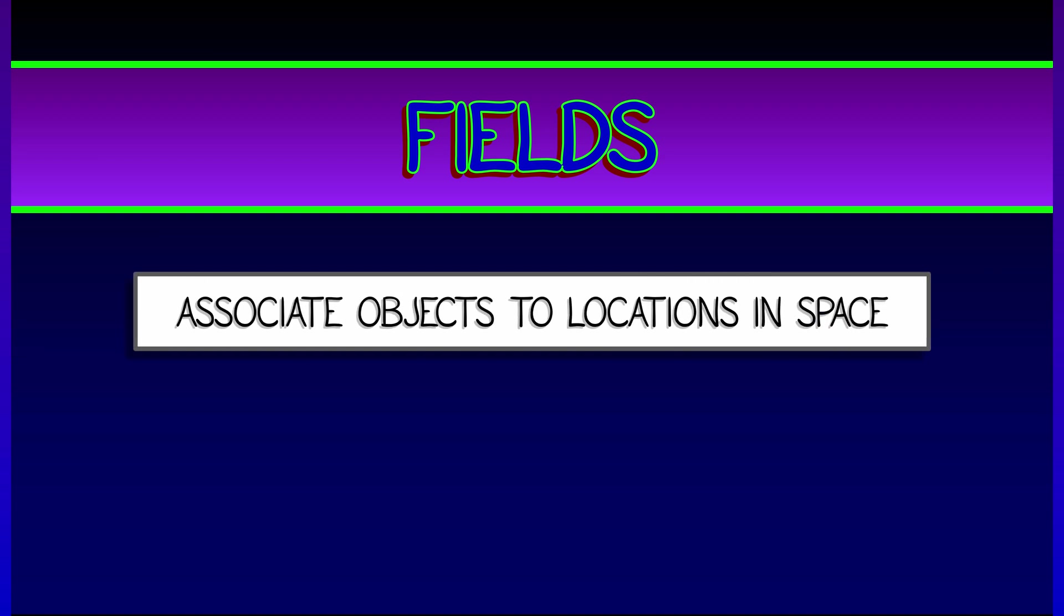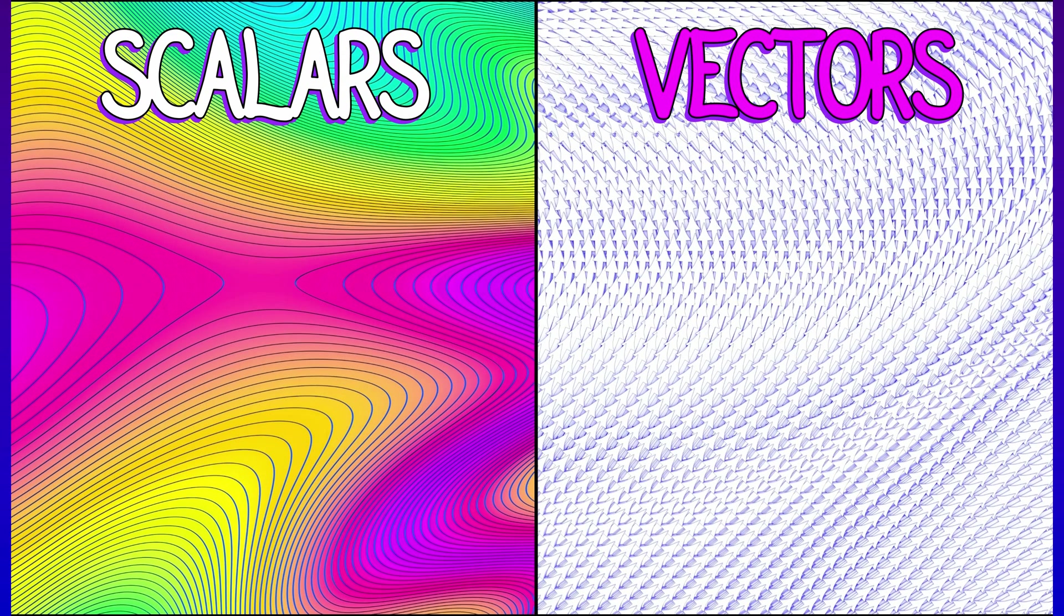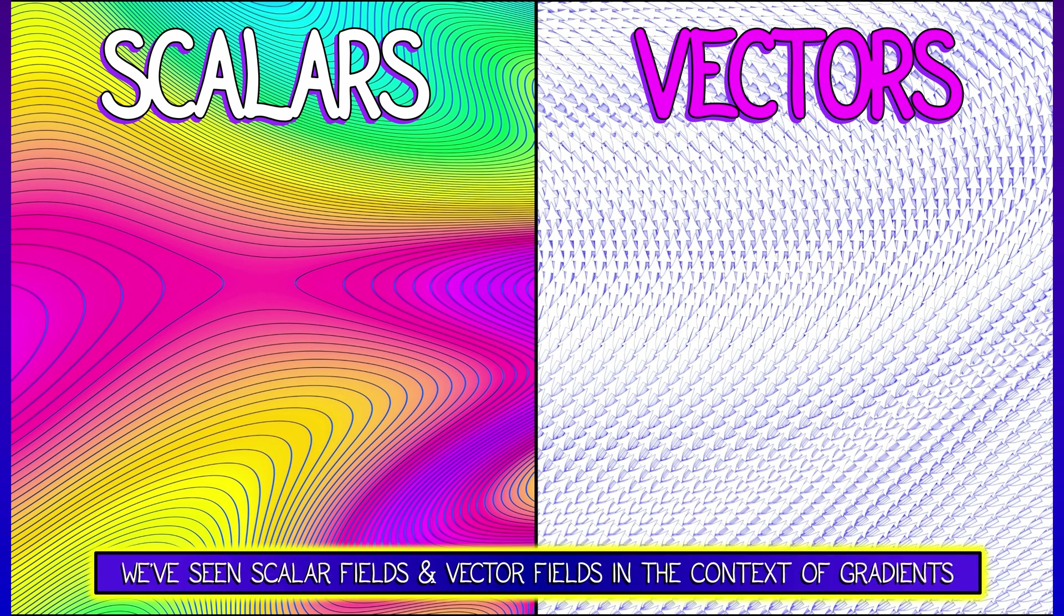Fields are structures that associate certain objects to locations in space, and calculus is going to analyze the local and global structure of these objects. Now, you've seen fields before in the context of gradients, where we looked at scalar fields, and we've looked at vector fields, but we're going to take it to a different level.